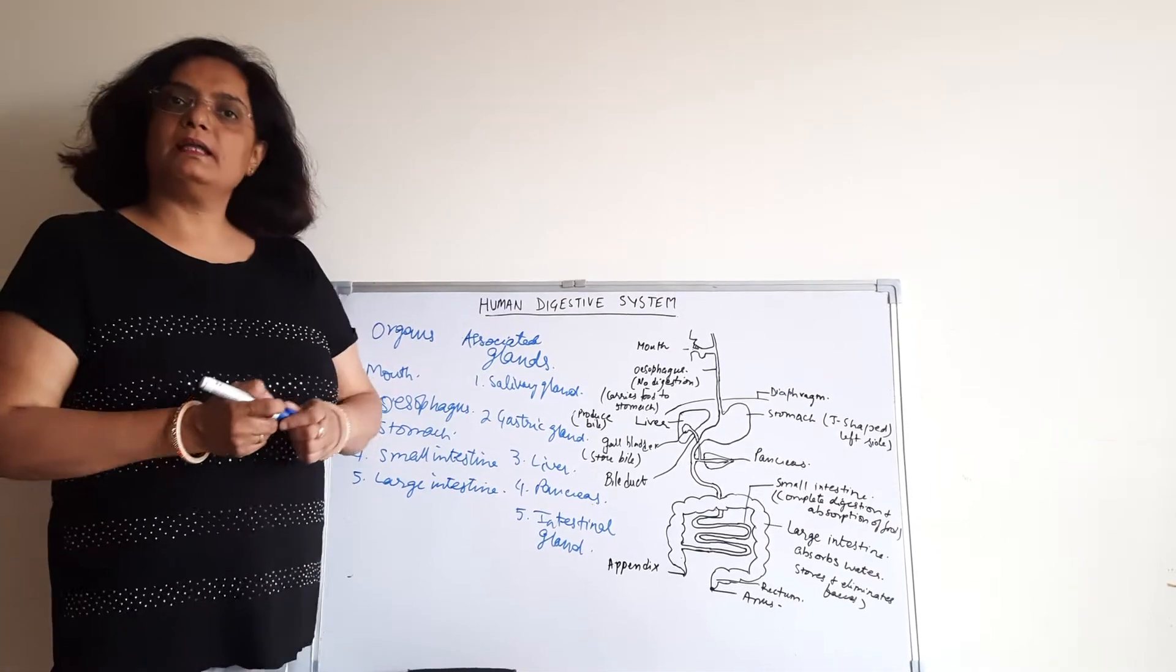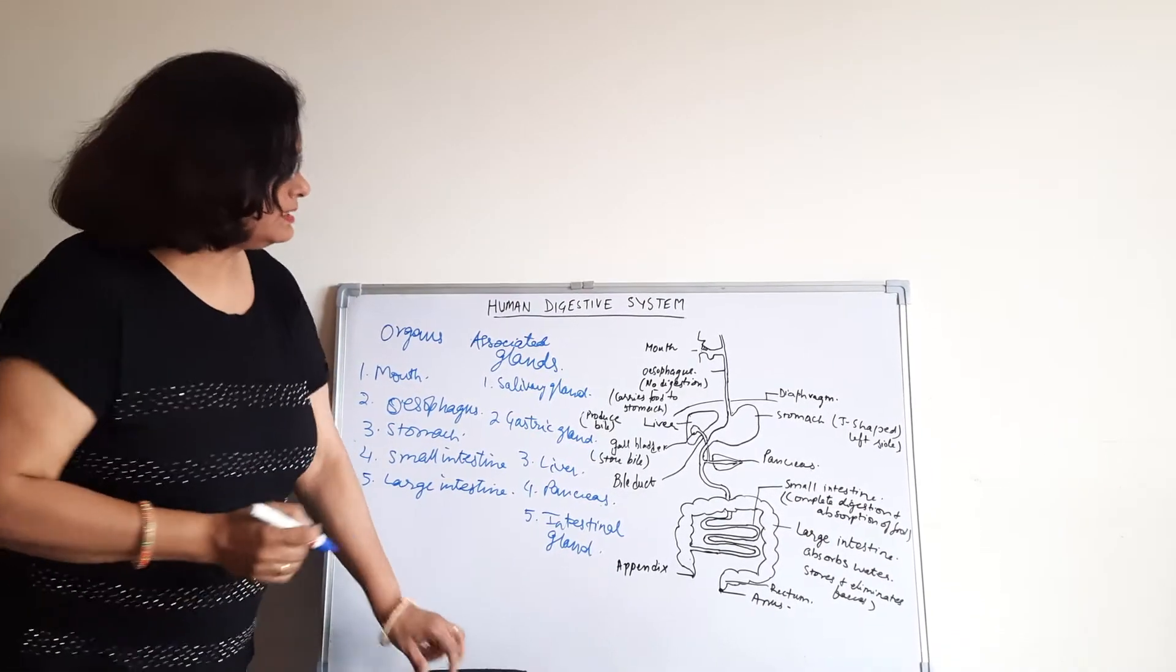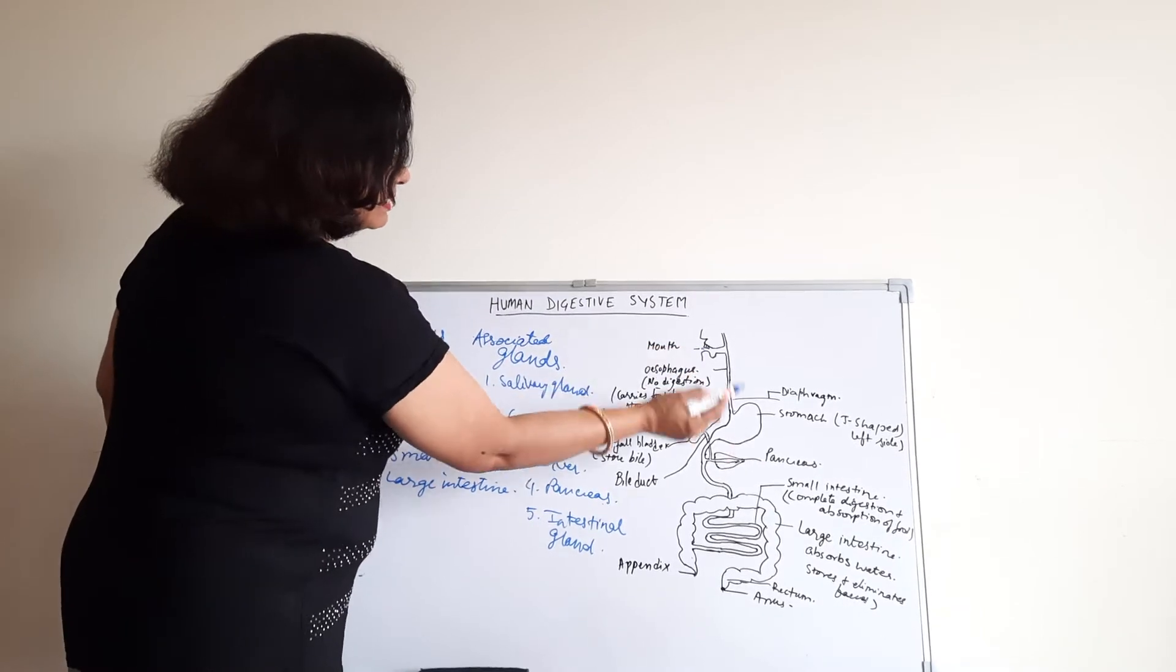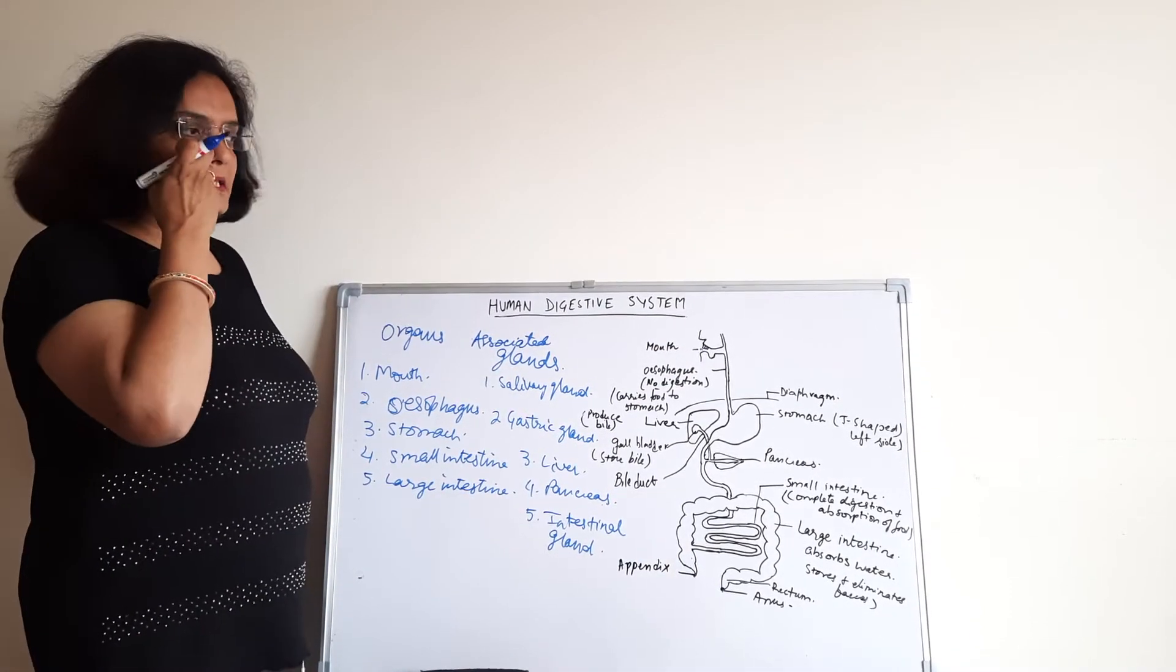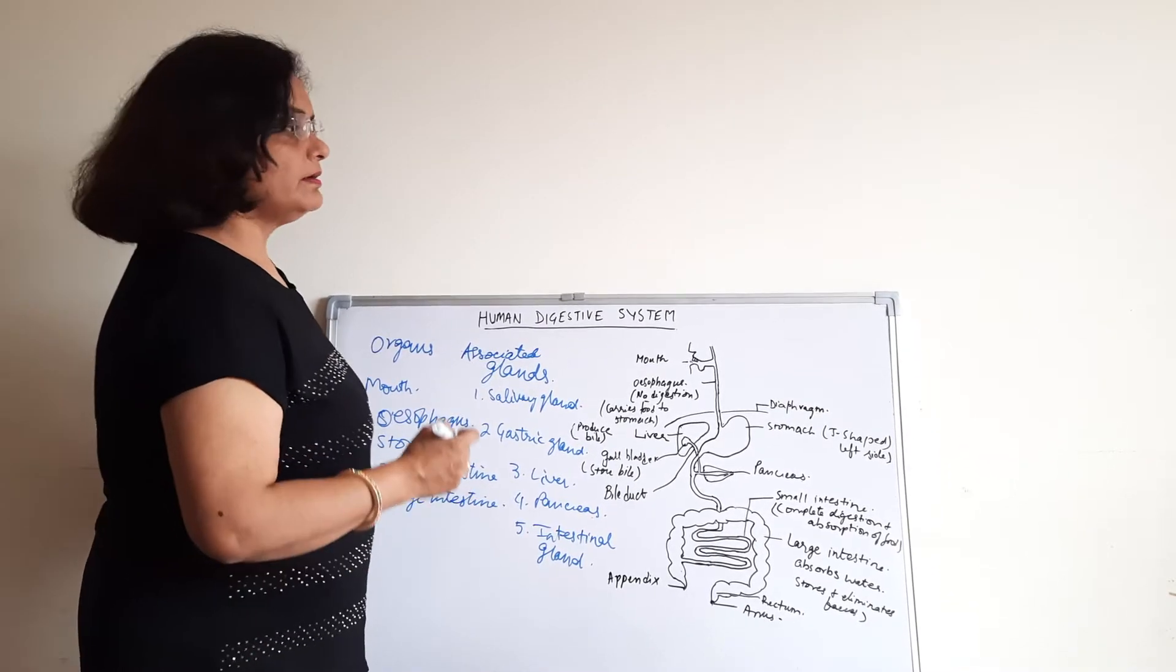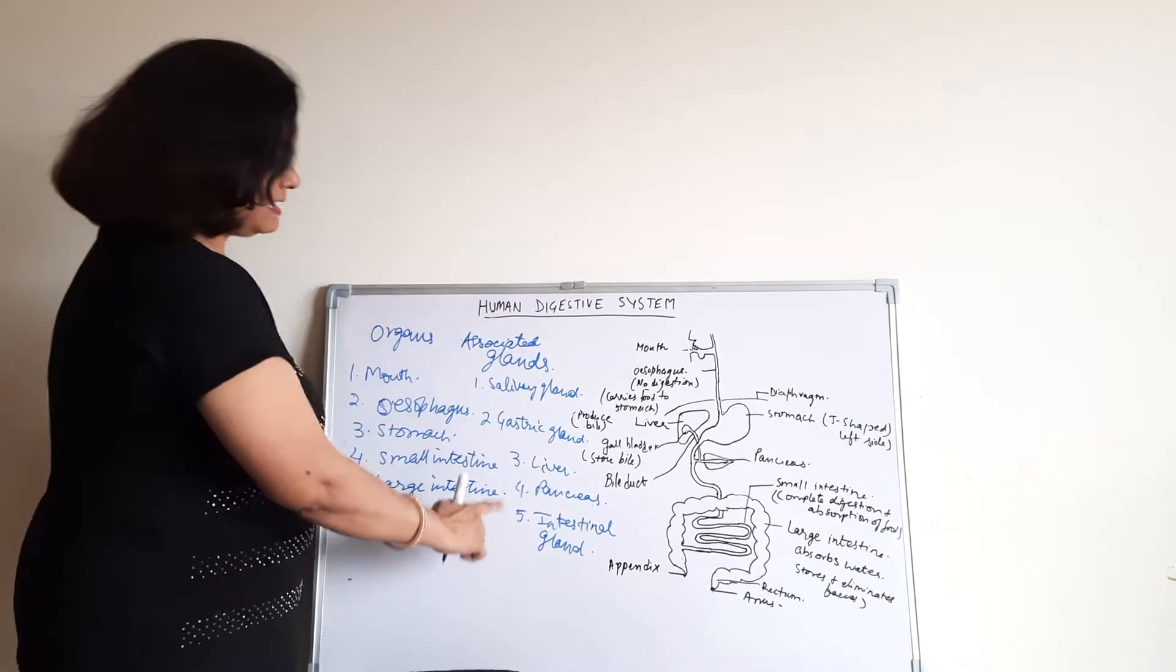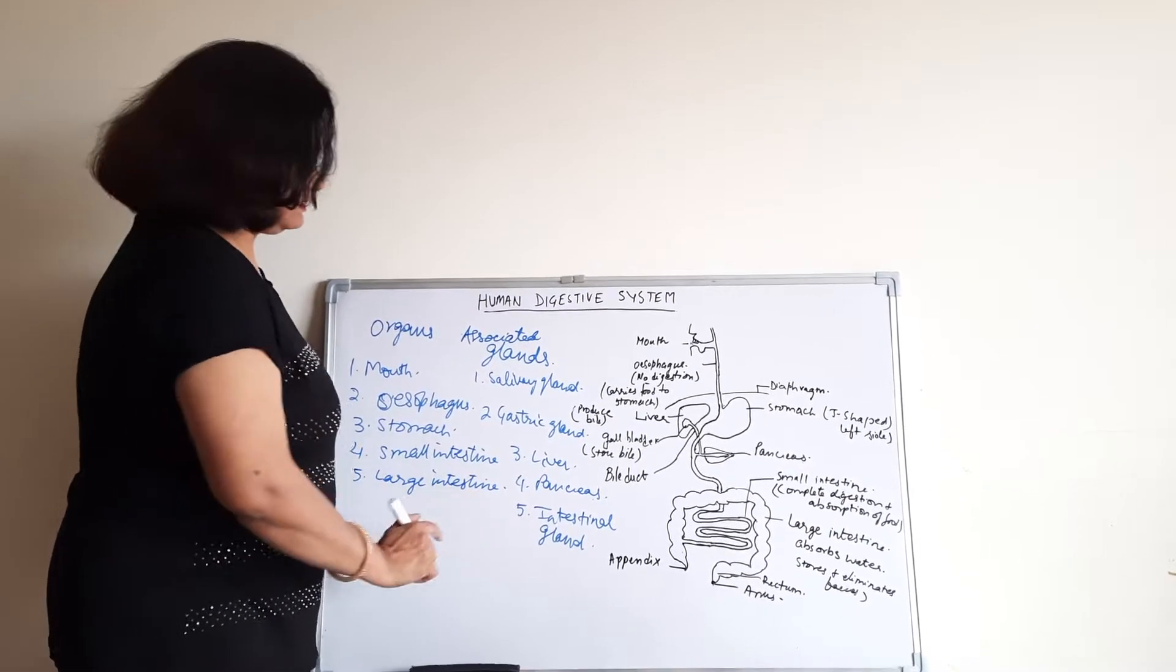So, what is the alimentary canal? The alimentary canal is a long tube that starts from the mouth up to the anus. And in human beings, it is around 9 meters long. And the alimentary canal is the organs, and these are the associated glands.